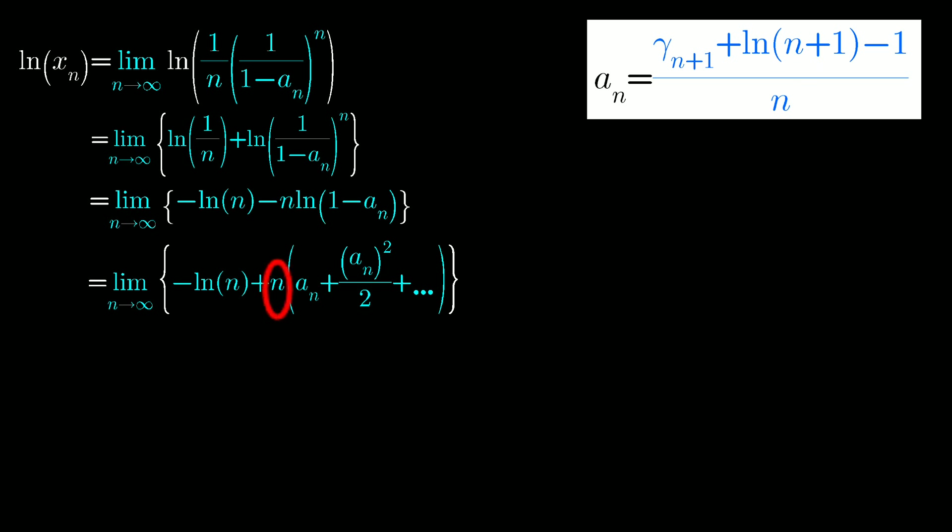On multiplying it by outside n, only the numerator n will cancel out but the denominator n will always be left, and when we put limit on this that becomes 0. Hence we will take only the first term of this expansion.